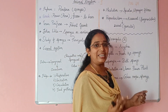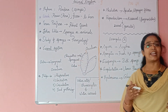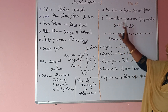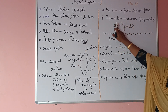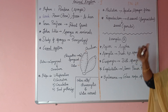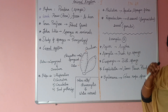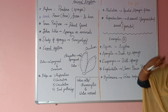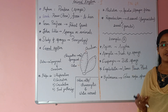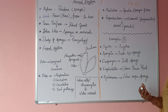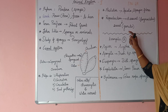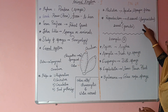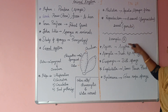Reproduction in Porifera: there is both sexual and asexual reproduction. Asexual reproduction occurs by means of fragmentation. Sexual reproduction occurs by gamete formation.